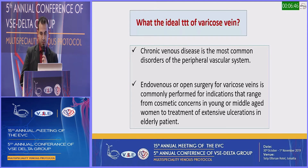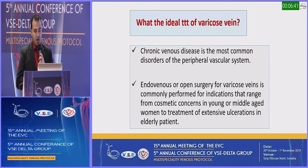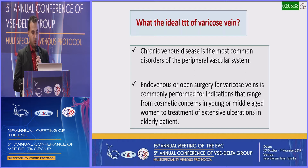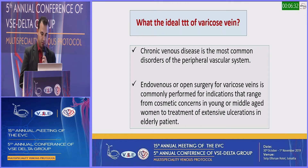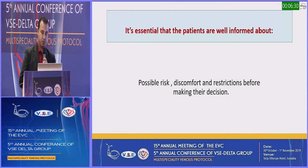What is the ideal treatment of varicose vein? Chronic venous disease is the most common disorder of the peripheral vascular system. Endovenous or open surgery for varicose vein is commonly performed for indications ranging from cosmetic concern in young or middle-aged women to treatment of extensive ulceration in elderly patients. It is essential that patients are well informed about possible risks, discomfort, and restrictions before making their decision.